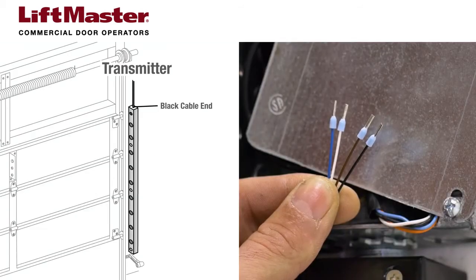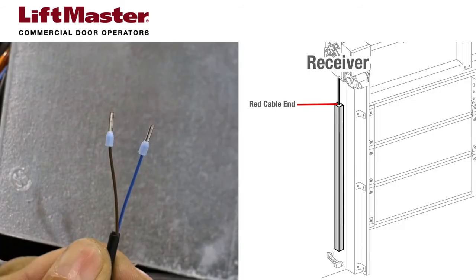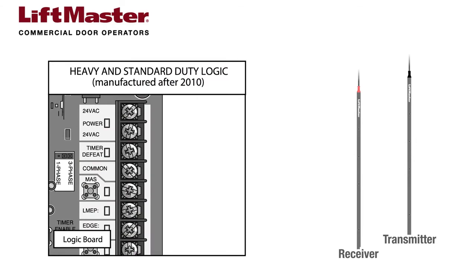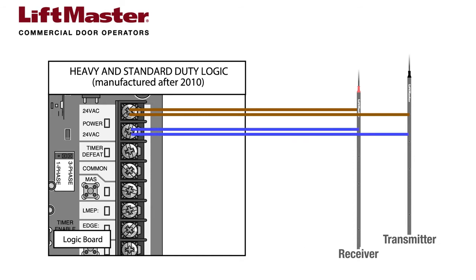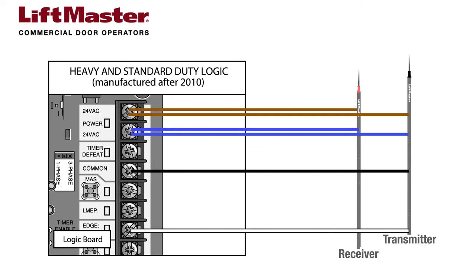The transmitting light curtain has four wires. The receiving light curtain has two wires. The two brown wires are wired in parallel to one of the 24 volt AC power terminals in the operator. The two blue wires are wired in parallel to the other 24 volt AC power terminal in the operator. The black wire connects to the common terminal in the operator. The white wire connects to the edge terminal in the operator.